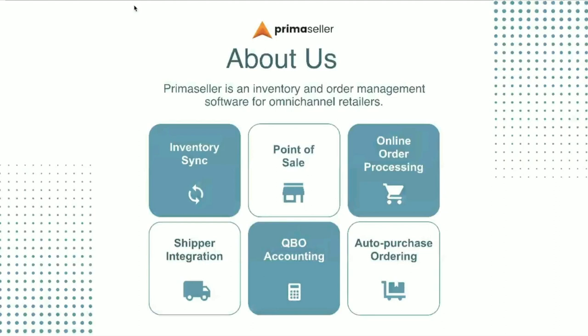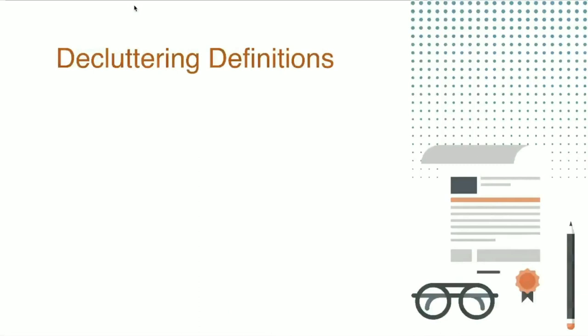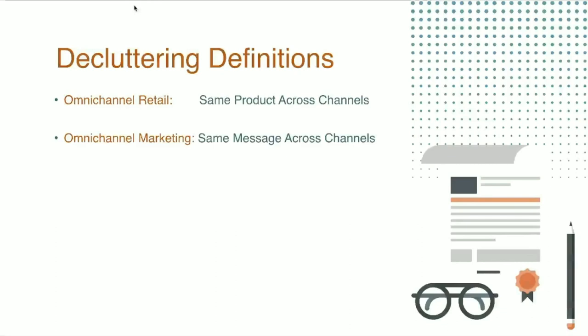Let's start with decluttering a few definitions. Omni-channel retail is a heavily used term — what it really means is that you're selling the same product across channels. Whether someone buys that product through your store, online, or anywhere else, it is the same product with the same description and the same pricing. Consistency is really essential.